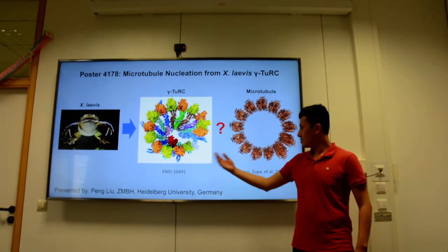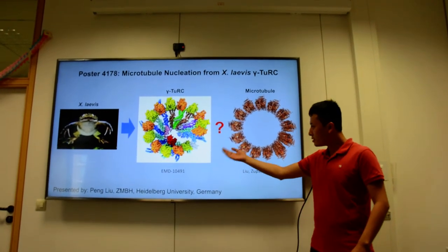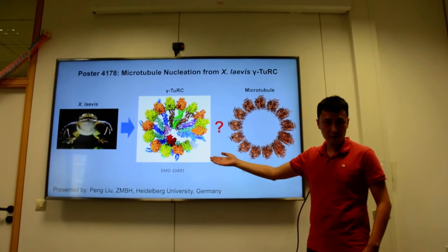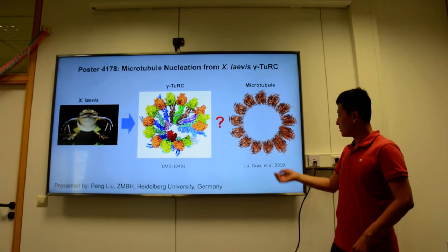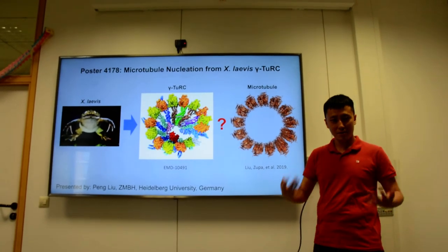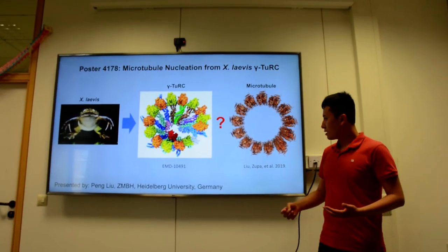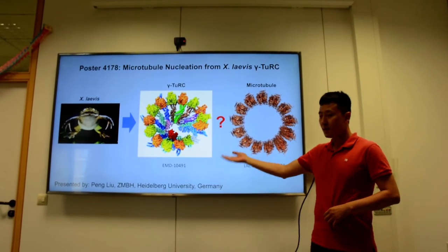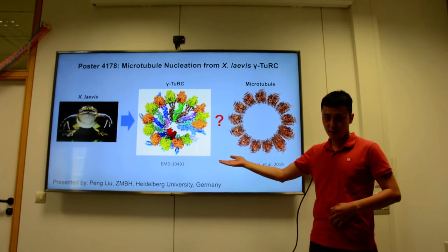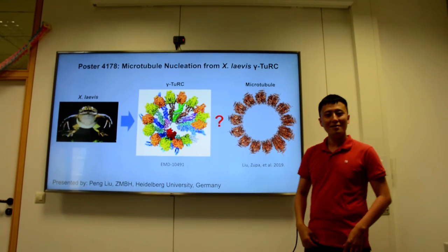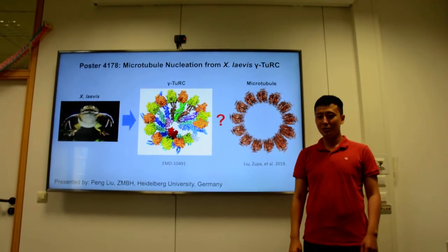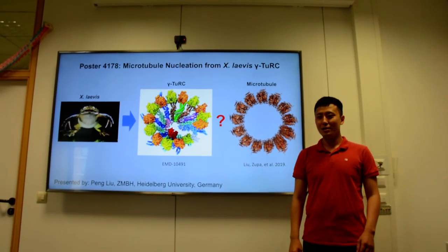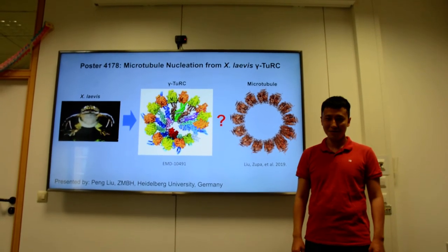Also, we found the γ-TuRC surprisingly doesn't fit the geometry of the microtubules. How does this happen? How can the γ-TuRC be the template if like this? For more information, please check our poster 4178. Thank you.